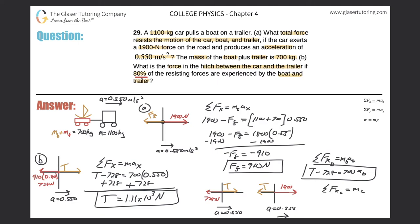For the car: sum of forces in x equals mass of car times acceleration of car, giving 1900 minus T equals 1100 times a_c. I have two equations. Since both objects have the same acceleration, I can solve one equation for acceleration and substitute into the other.